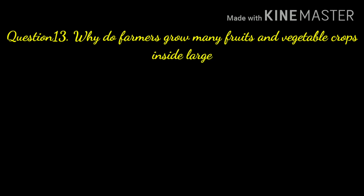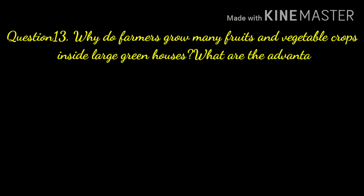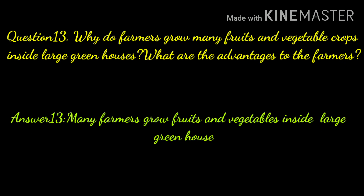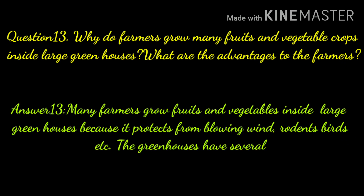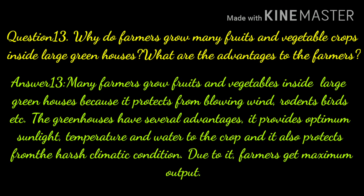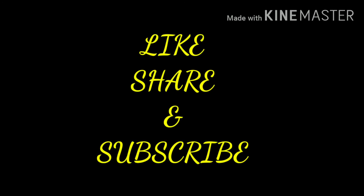The last question is question number thirteen: why do farmers grow many fruits and vegetable crops inside large greenhouses — what are the advantages to the farmers? Answer: many farmers grow fruits and vegetables inside large greenhouses because it protects from blowing wind, rodents, birds, etc. The greenhouse provides optimum sunlight, temperature, and water to the crop, and also protects from harsh climatic conditions, allowing farmers to get maximum output. Thank you for watching — please do like, share, and subscribe.